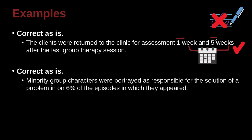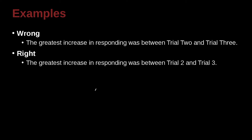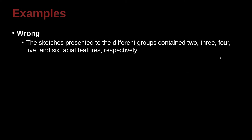Minority group characters were portrayed as responsible for the solution of a problem in 6% of the episodes in which they appeared. Here, 6 is smaller than 10, but it's a percentage — and remember, for percentages we use the number. The greatest increase in responding was between trial 2 and trial 3. Again, trial and trial are similar things being compared; they're in a series, so we write the number even though they're less than 10.